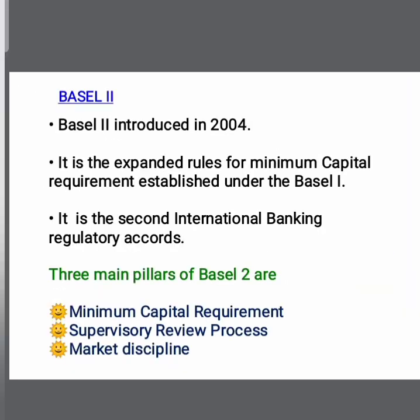Next is Basel II, which was introduced in 2004. It expanded the rules for minimum capital requirements established under Basel I. Basel II is the second international bank regulatory accord and is built on 3 pillars: the minimum capital requirement, the supervisory review process, and market discipline.